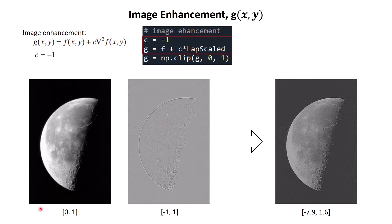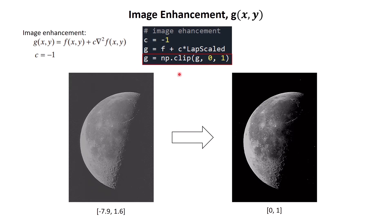Finally, we add our original image with our scaled Laplacian image. Our original image has pixel values from 0 to 1 and our Laplacian image has values from negative 1 to positive 1, so after adding these two variables the resultant image has pixel values below zero as well as larger than 1. To deal with this we clip pixel values using np.clip, which changes any value below zero to 0 and any value larger than 1 to 1. This gives us our final enhanced image.